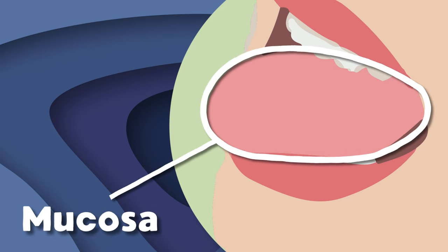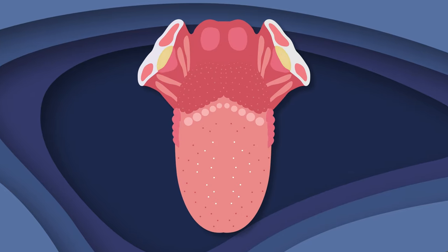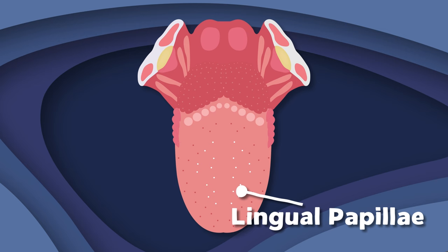Your tongue is covered in a pink tissue called mucosa. Its main job is to protect deeper tissue when you gnaw. The rough parts of your tongue are called the lingual papillae. They are the small bumps that store taste buds so you enjoy food all day.